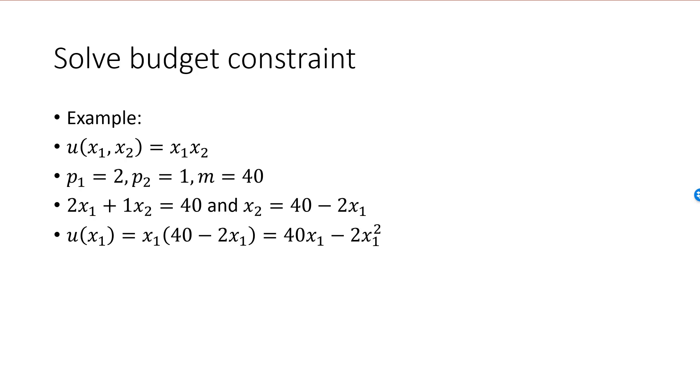My utility function is x1 times x2. And since I know that x2 must be equal to 40 minus 2x1 for an optimal bundle, I can replace x2 with 40 minus 2x1 in the utility function. This will give me a utility function of only one variable, x1. u of x1 is equal to x1 times 40 minus 2x1, which is equal to 40x1 minus 2x1 squared. This is a function of a single variable, which I can optimize by setting the derivative to 0.